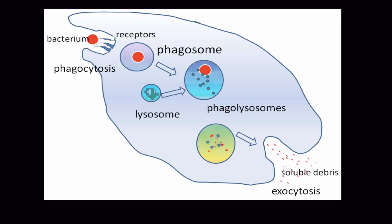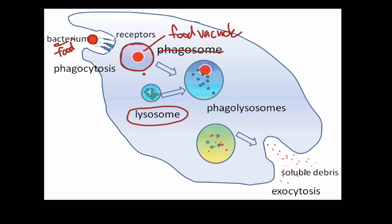Here's a diagram showing what we've been discussing. A food particle is labeled in red, and the cell is surrounding it. The cell recognizes it as a food particle because it has protein membrane receptors that interact with the surface of the bacterium. This food particle ends up surrounded by what was once plasma membrane material — this is now called a food vacuole. Then the lysosomes fuse with the food vacuole so the enzymes inside the lysosome can interact with and digest the food particle.